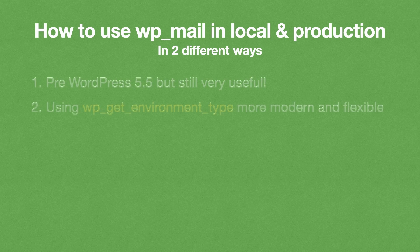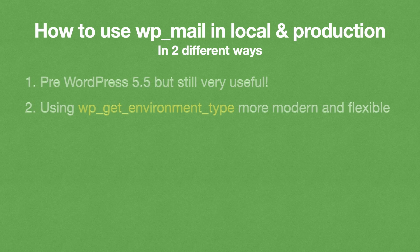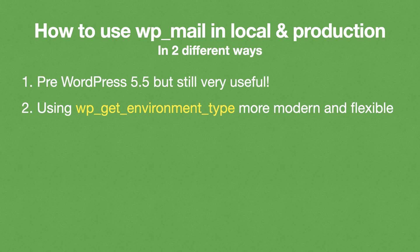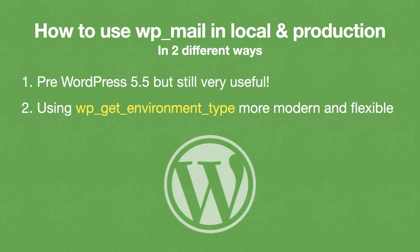First I'll show you a method I used before WordPress 5.5 — I still use this method because it's still useful for changing API settings. Then I'll introduce a more flexible and modern approach utilizing core WordPress functionality using a function called wp_get_environment_type. I'm a stickler for developing the WordPress way, so if there's a function in core and it's available, I'll use it — they've already done all the hard work, so there's no point reinventing the wheel.